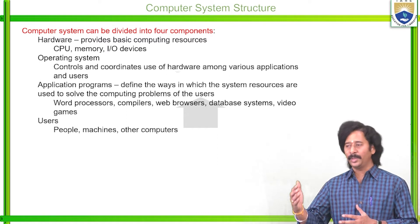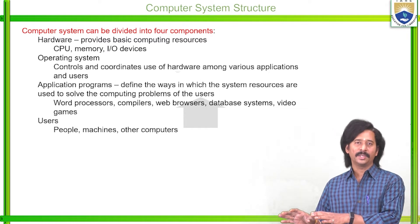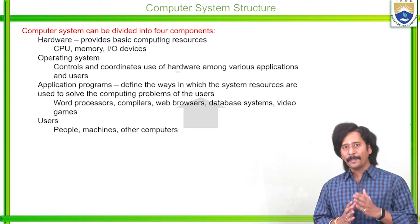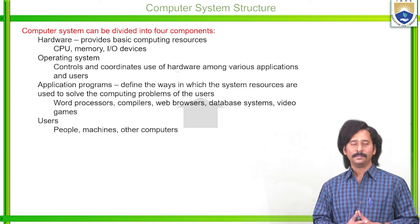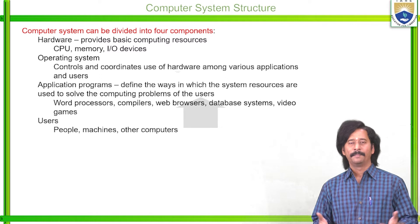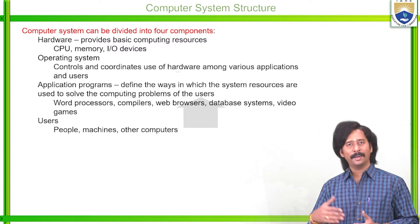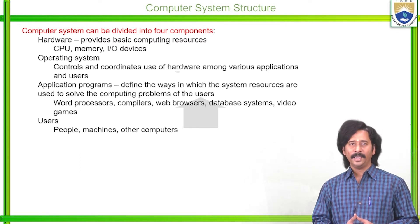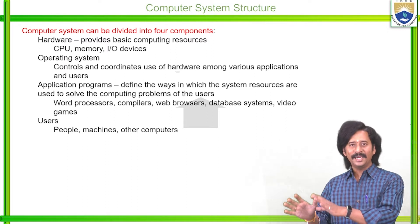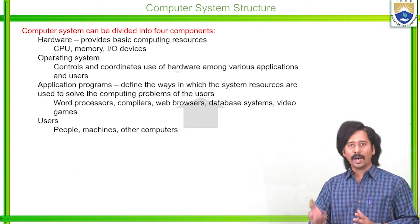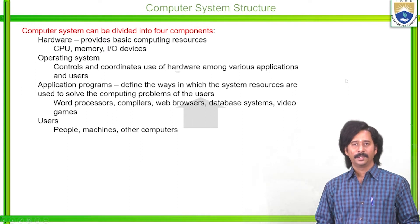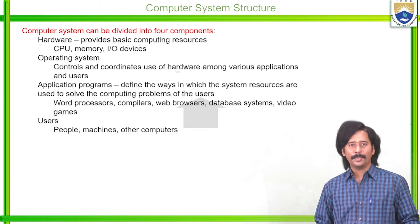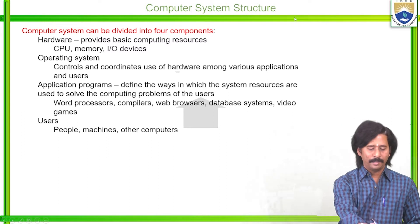The operating system controls and coordinates hardware components among various applications and various users. Nowadays we can call this multi-tasking — single-user, multi-tasking, and multiple-user multi-tasking systems are all there. Whatever operating system handles any particular application program, it controls and coordinates the use of various hardware devices among various applications and users. Now coming to the third component — application programs.